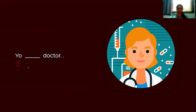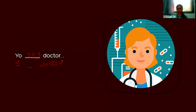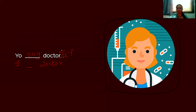Next example: 'yo' is 'I,' and 'doctor' is the same word in both languages, just with a slight pronunciation difference. Yo soy doctor means 'I am a doctor.' Notice we don't put an indefinite article here — when describing an occupation, we leave it out. For a female: yo soy doctora.